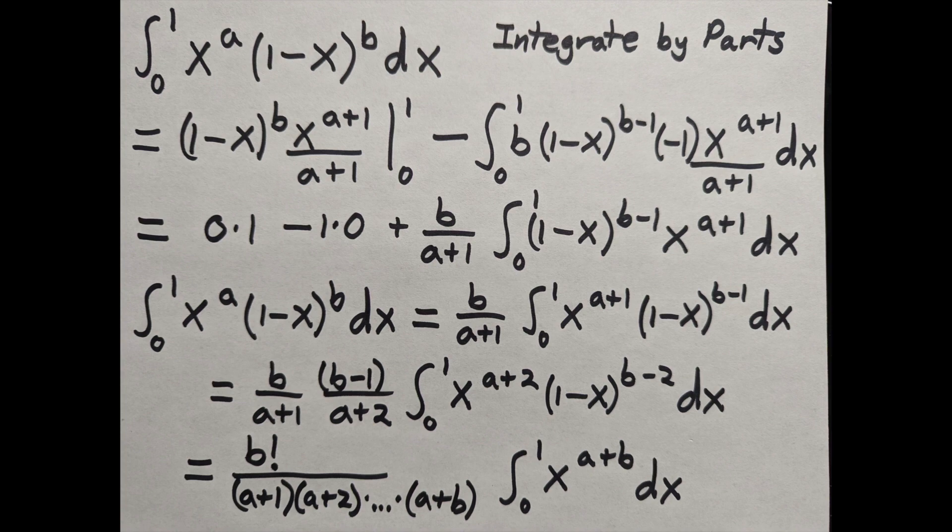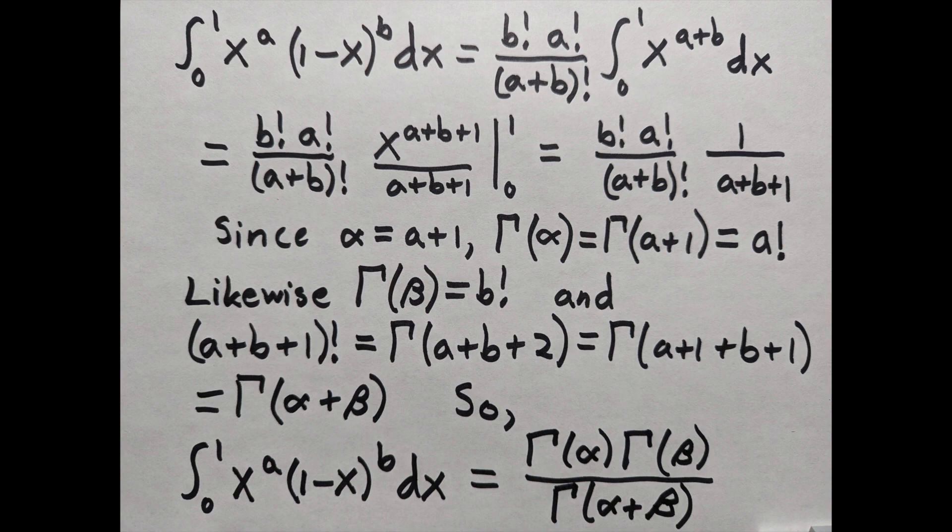Simplifying that fraction, we get a factorial b factorial over a plus b factorial times a simple integral that turns out to be 1 over a plus b plus 1.